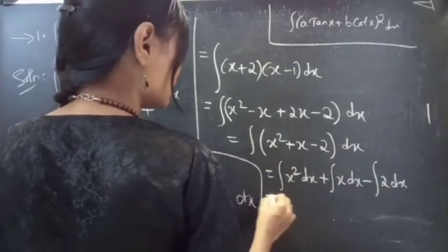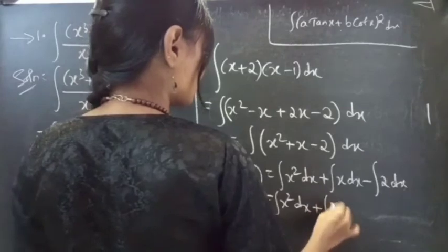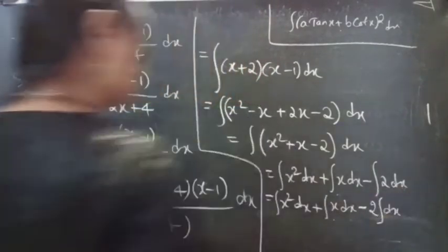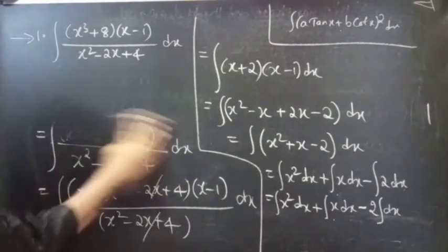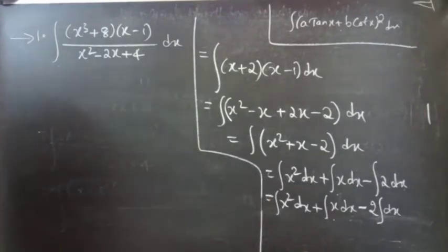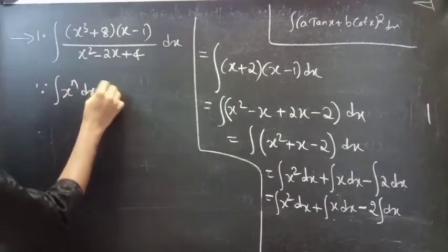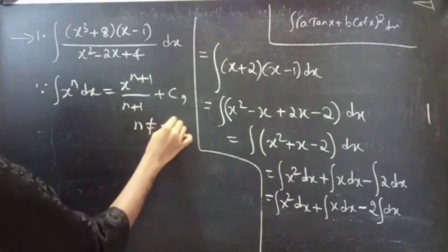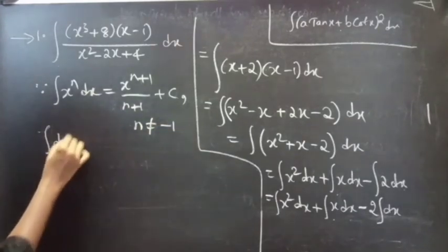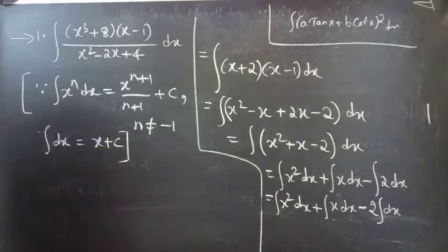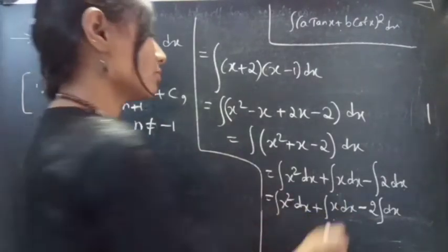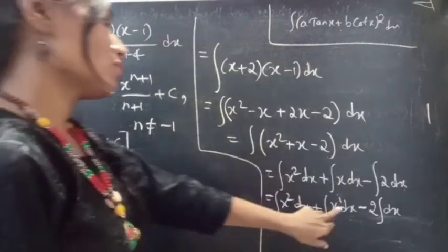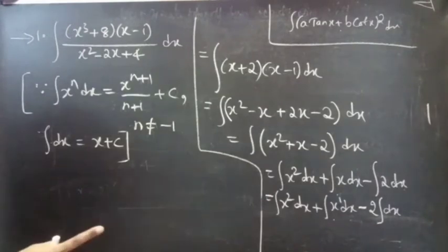Now write the constant outside the integral. We know that ∫xⁿ dx = x^(n+1)/(n+1) + C for n ≠ -1. We also have ∫dx = x + C. Here, in the first term n = 2 and in the second term n = 1, both of which are not equal to -1, so we apply the power rule formula.